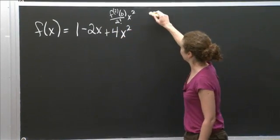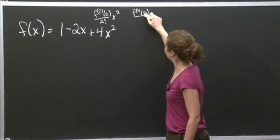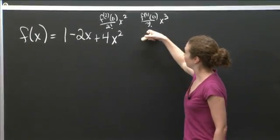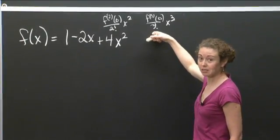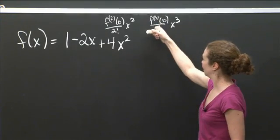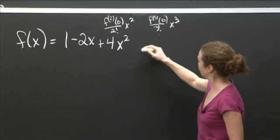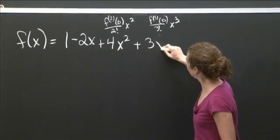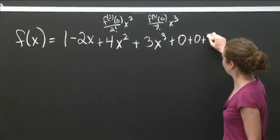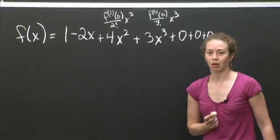And then I have to have the third derivative evaluated at 0 divided by 3 factorial times x cubed. What's 3 factorial? 3 factorial is 6. What was the third derivative evaluated at 0? It was 18. 18 divided by 6 is 3, so I get plus 3x cubed. And all the other terms were 0, so I'll just stop writing them.